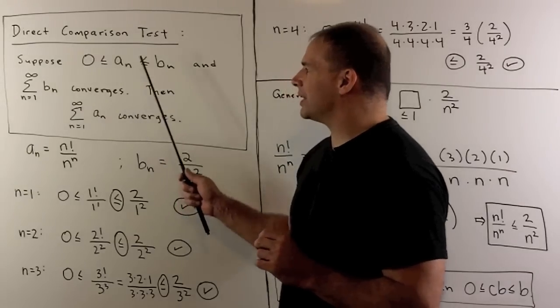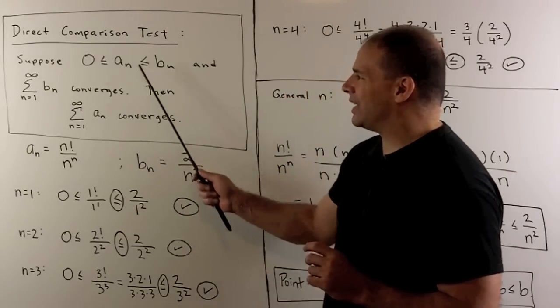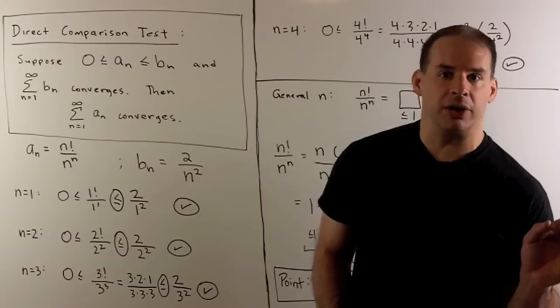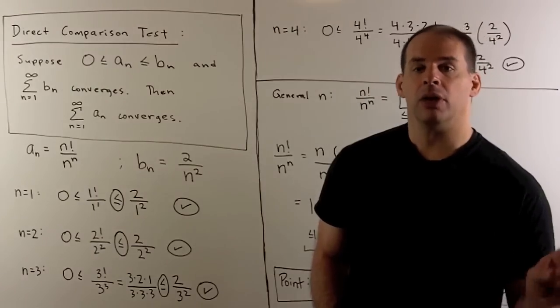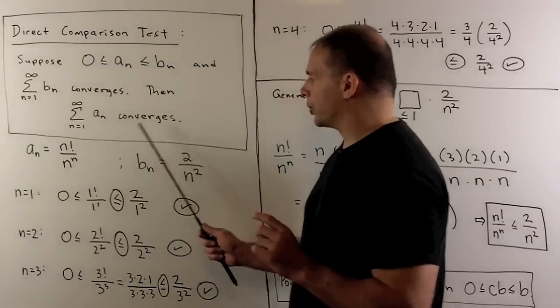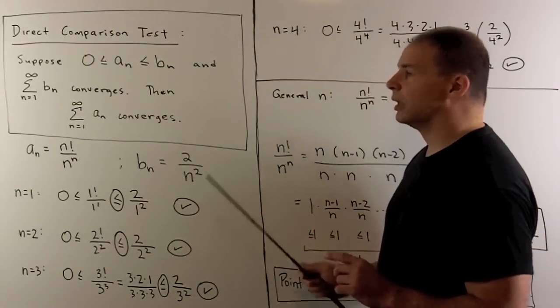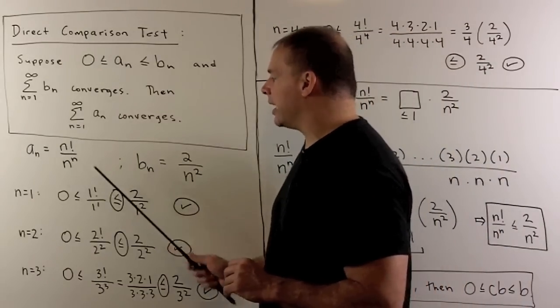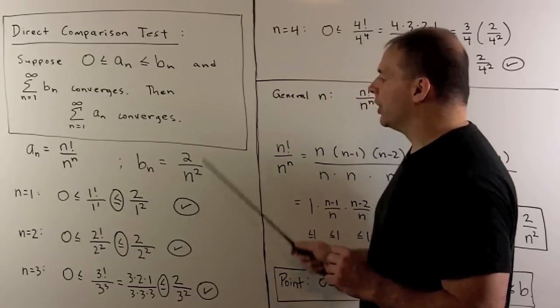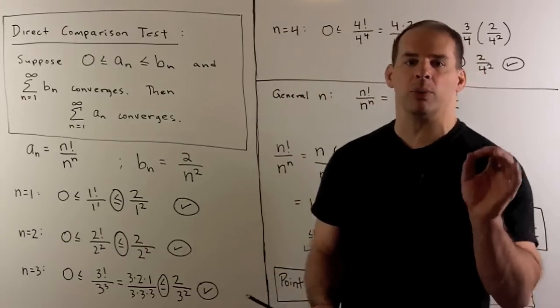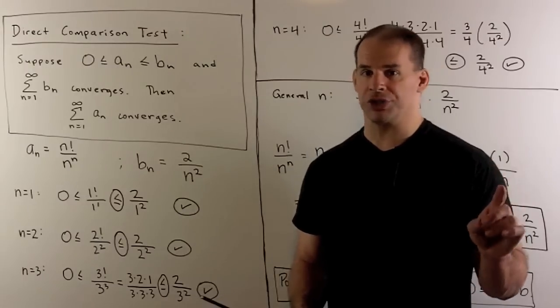Direct comparison test. We're going to have two sequences, a sub n and b sub n. a sub n is always between 0 and b sub n, and the series for b sub n converges. The conclusion is, the series for a sub n also converges. In our case, a sub n is n factorial over n to the n, b sub n is equal to 2 over n squared. So the series for b sub n is a p series with p equals 2, so it converges.